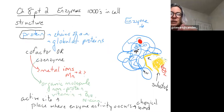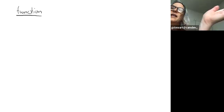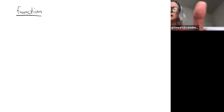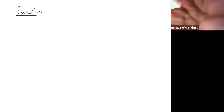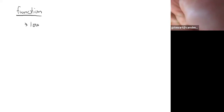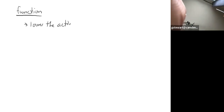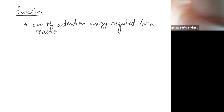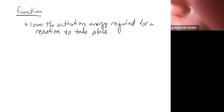To review the structure of enzymes: globular protein, cofactor, coenzyme, -ase suffix, active site. Now let's talk about the function of enzymes. The true definition of an enzyme's function is to lower the activation energy required for a reaction to take place. In chemistry we call a substance that does this a catalyst — in shorthand, it speeds up a reaction by lowering the activation energy.